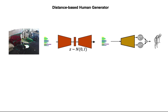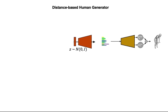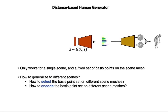A multi-layer perceptron takes the reconstructed body feature and regresses full body vertices. During inference time, we randomly sample Gaussian noise Z and generate the distances between the body and the environment, then regress the body vertices. However, this model requires a fixed set of basis points on the scene mesh and only works for a single scene.